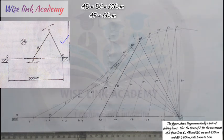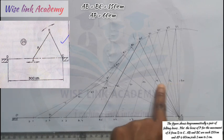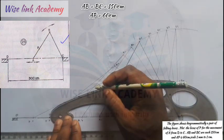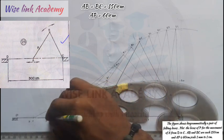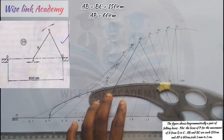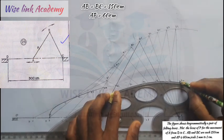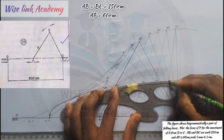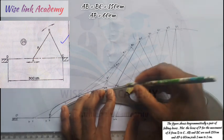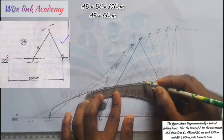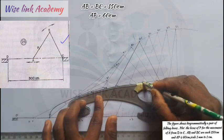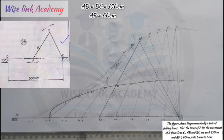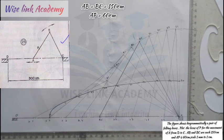Now I'll introduce my French curve, starting from P0 to P10. I'll use the French curve to join all the P points together, ensuring they all touch each other. This is the locus of point P for the full movement of A from D to C, as shown in the figure.